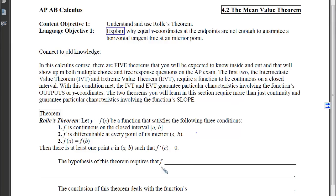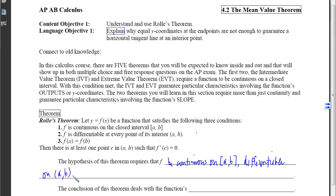The hypothesis of Rolle's Theorem requires that f be continuous and that the two y-coordinates be the same. As long as we satisfy these three conditions, the conclusion guarantees a y-coordinate on the derivative curve that is zero — or equivalently, a slope of zero on the original function.